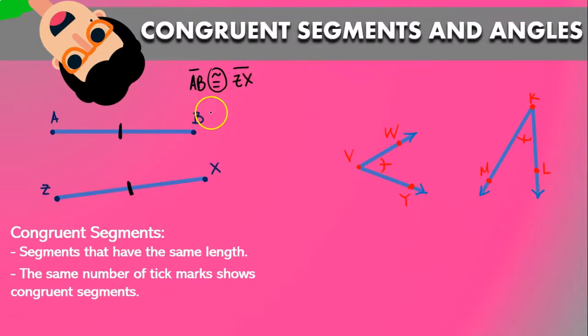So if AB is 5 centimeters long, then ZX is also 5 centimeters long. The length of AB equals the length of ZX.